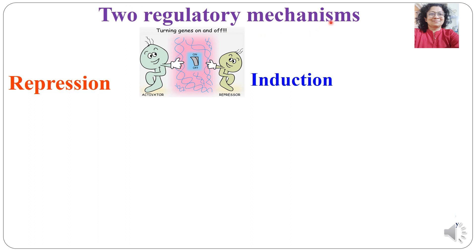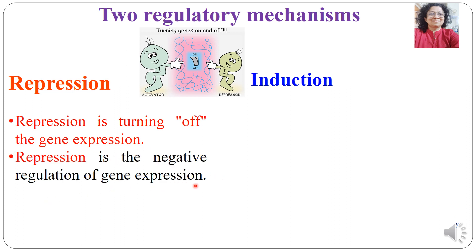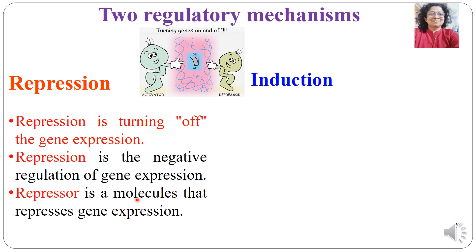There are two regulatory mechanisms: increase and decrease. When there is a decrease of mRNA synthesis or protein production, this is known as repression — the gene is repressed. Repression is basically turning off gene expression; it is a negative regulation. A repressor is a molecule that represses gene expression, causing transcription and therefore protein synthesis to decrease.